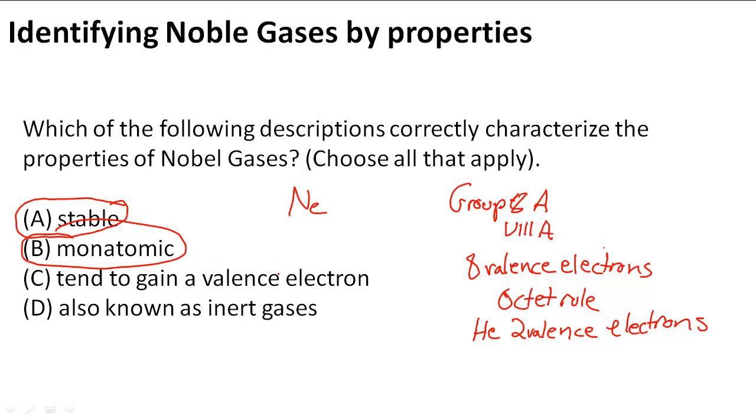And it tends to gain a valence electron. Well, it's happy with the 8 or 2 that it has, so that must mean that that one is not one of the properties that we're looking for, a description that we're looking for.